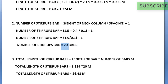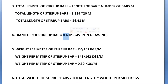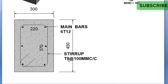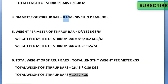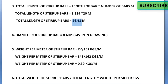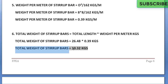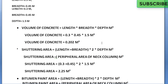Total length of stirrup bars equals length of stirrup into number of stirrups: 1.324 into 20 equals 26.48 meters. Diameter of stirrup bar is 8 mm from the drawing. Weight per meter equals d squared divided by 162: 8 squared divided by 162 equals 0.39 kg per meter. Total weight of stirrup bars equals total length into weight per meter: 26.48 into 0.39 equals 10.32 kg.